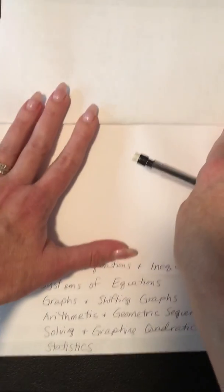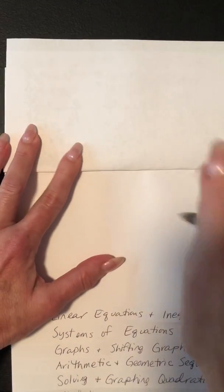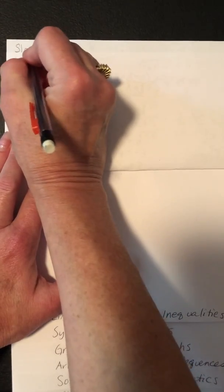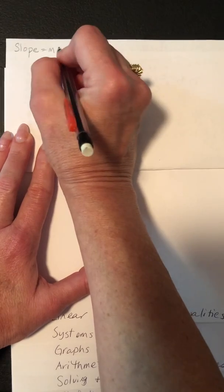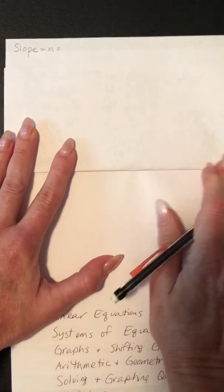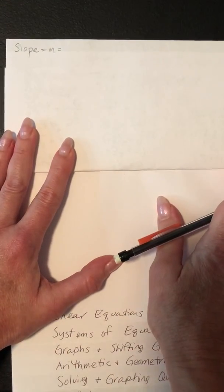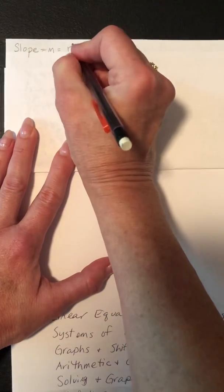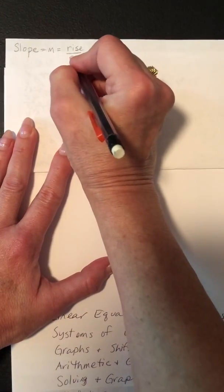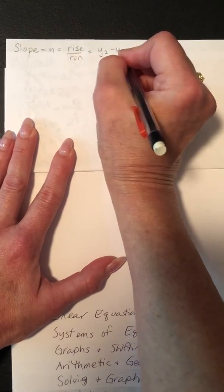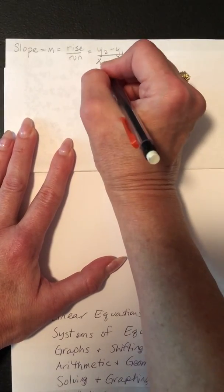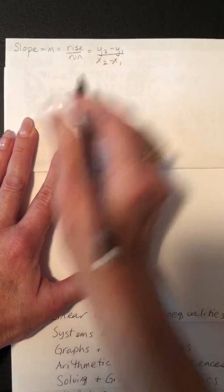And in linear equations, a lot of times you talk about this tilt of a line, and the tilt of the line is called the slope. And the shortcut way to write the word slope is the letter M. We always say that's because of mountains. It is the rise over the run, so it's the change in the y's over the change in the x's.